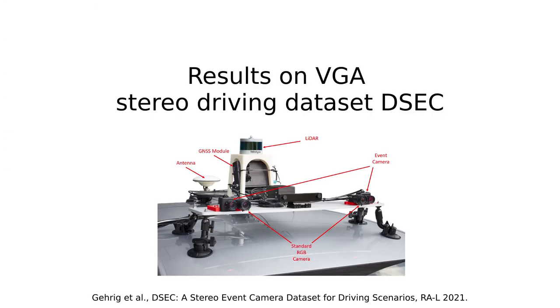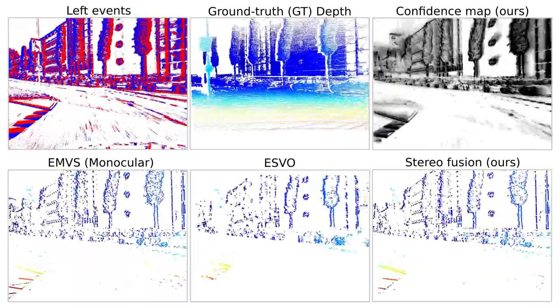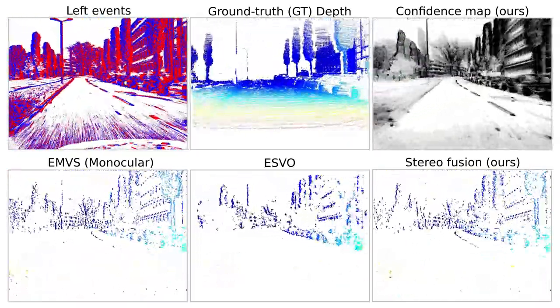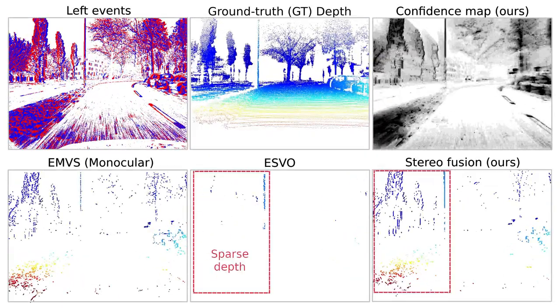Next, we show results on the DSIC driving dataset comprising event cameras with video resolution. The cameras are mounted on a car driving through city streets. Our method can accurately recover more 3D edges than ESVO.